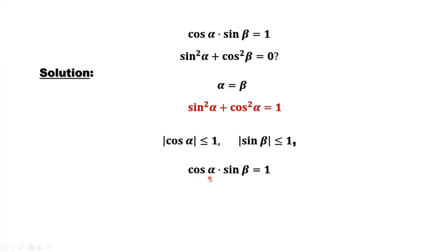Cosine alpha times sine beta equals one because each of the absolute values is bounded by one. So if one of them, the absolute value, is less than one,